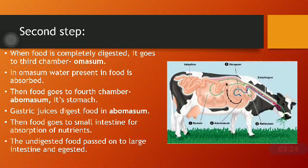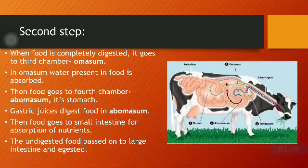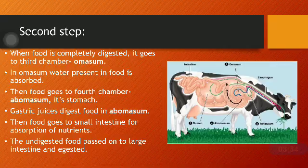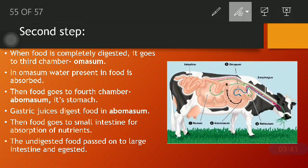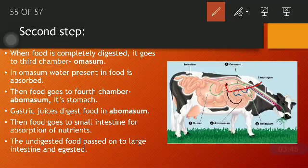In the second step, when the food is completely chewed again and re-swallowed, it goes to the third chamber — the omasum. In the omasum, water present in the food is absorbed.